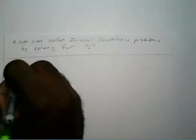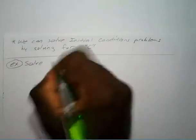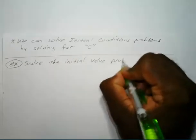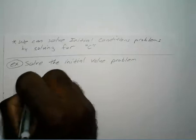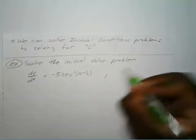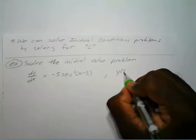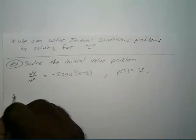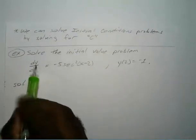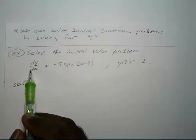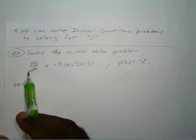So let's say we want to solve the initial value problem where the derivative of y with respect to x equals negative 5 secant squared of x minus 2, and we know that y of 2 is equal to negative 1. This could be dy/dx, y prime of x, or f prime of x — the notation doesn't matter.